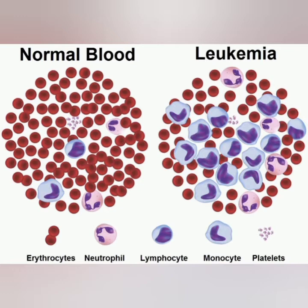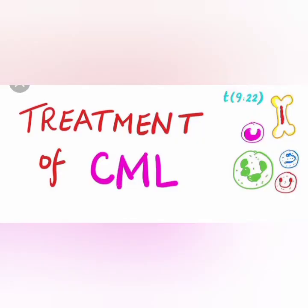In persons suffering from CML, there is an enormous increase in WBC count — typically 1 lakh to 4 lakh WBC counts per microliter. CML is characterized by an increased, unregulated, and uncontrolled growth in the number of white blood cells.